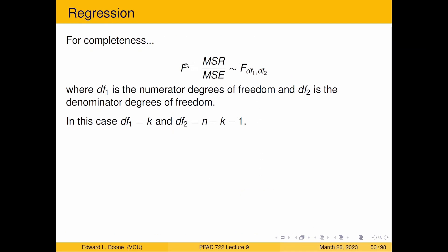So for completeness, we're going to say that F, our test statistic is the mean square regression over the mean squared error. And that's going to follow an F distribution that has two degrees of freedom, a numerator degrees of freedom and a denominator degrees of freedom. And in the case of regression, the DF one, or the numerator degrees of freedom is equal to the number of predictors in the model. And DF two is N minus K minus one. And we're not going to worry about how to come up with those right now. We're just going to use them as we have them.